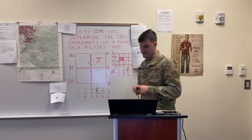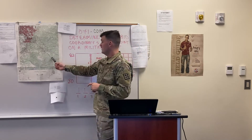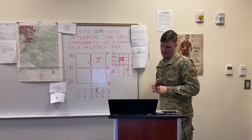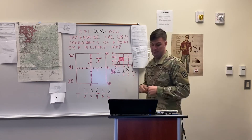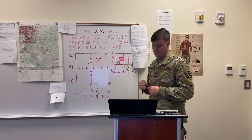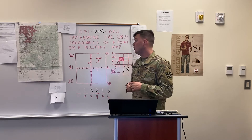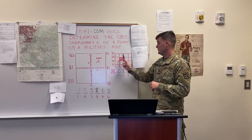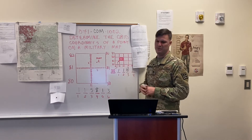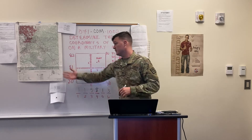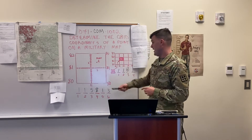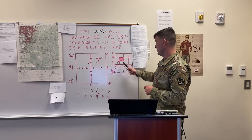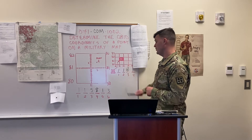You have a military map, and the military map can help you spot your location accurately. The map has vertical lines from top to bottom and horizontal lines from left to right. These lines form small squares that are a thousand meters. I've zoomed it in so you can see it better. I have a bigger version with a six-digit grid coordinate and a smaller version with a four-digit grid coordinate.